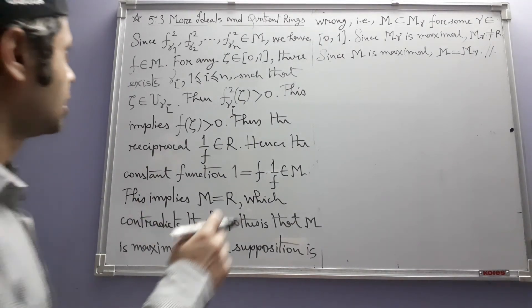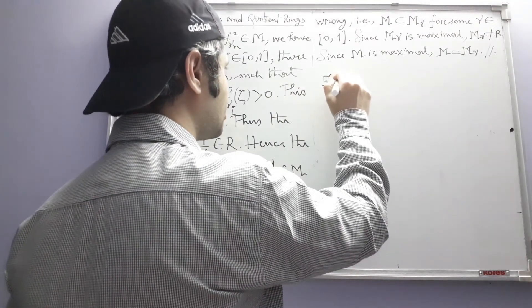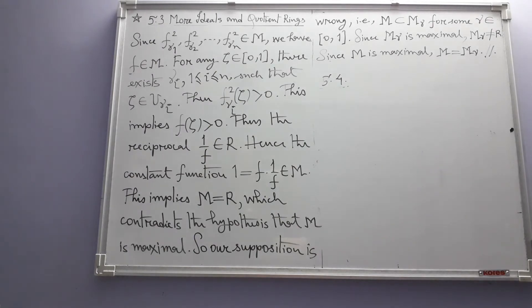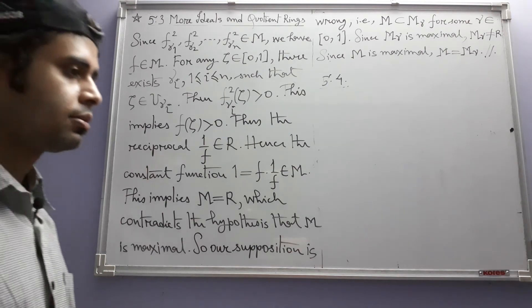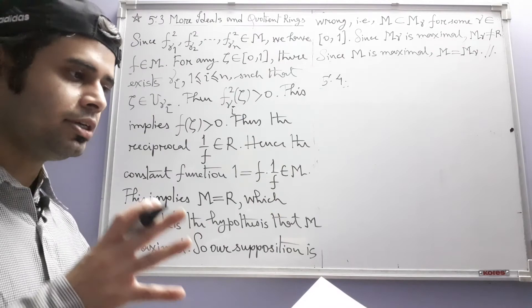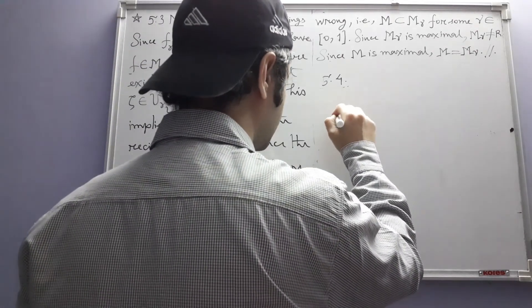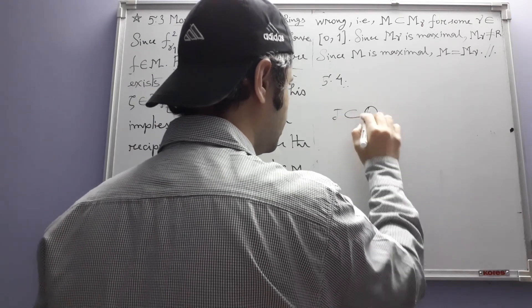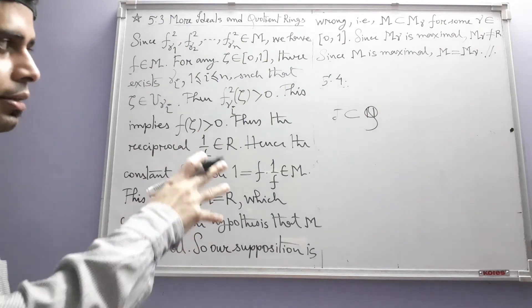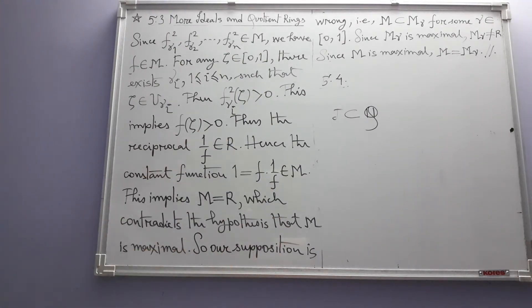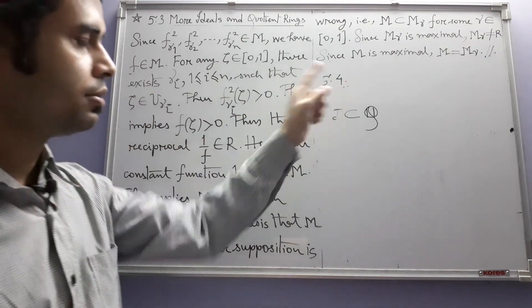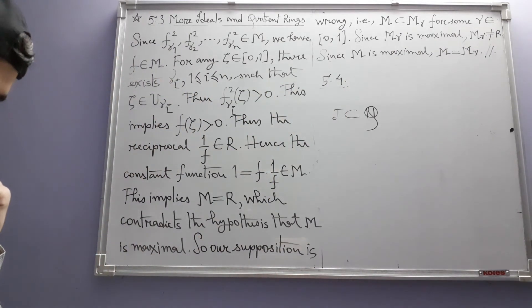The next thing after 5.3, we have 5.4. And this involves, if we are given an integral domain, then we can construct a field in which that integral domain can be embedded, much like how the ring of integers can be embedded in the field of rational numbers. That can be done generally for any integral domain. And at the end of this section, we will come across something called, there is a problem which leads to the idea of localization in algebraic geometry. We will see those things.